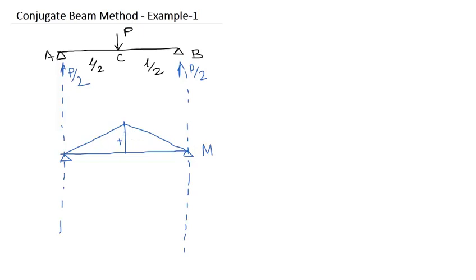But you have to draw the M by EI diagram. So the M by EI diagram is like this and this coordinate will be PL by 4EI. As this is a positive bending moment, so the load will be downward.